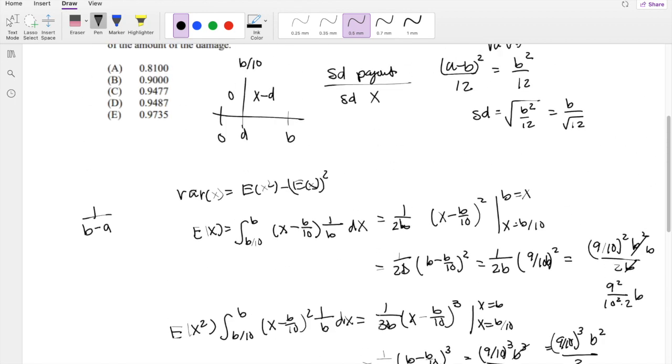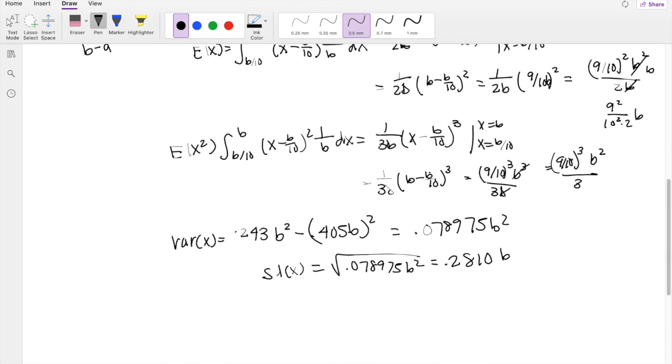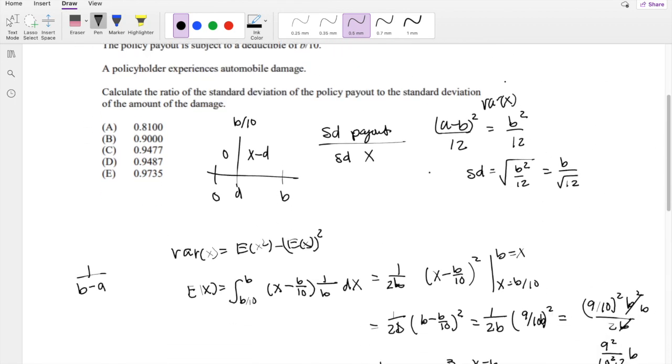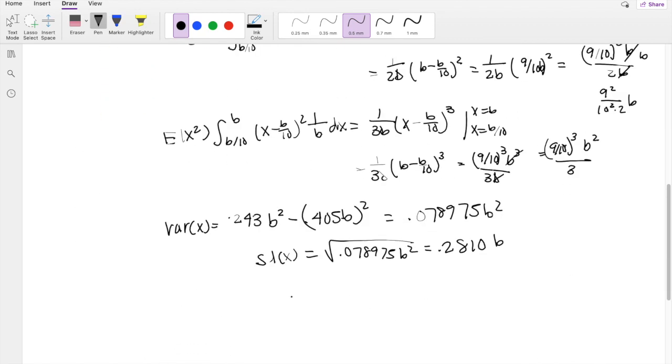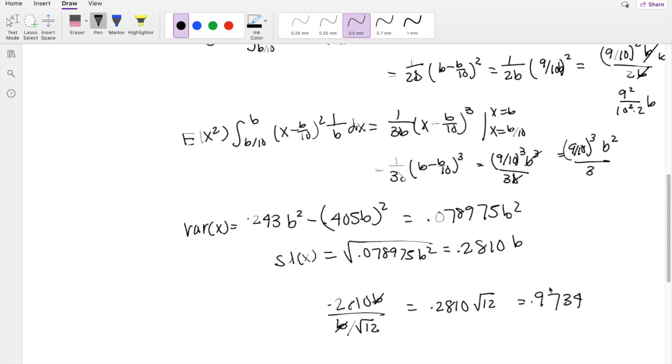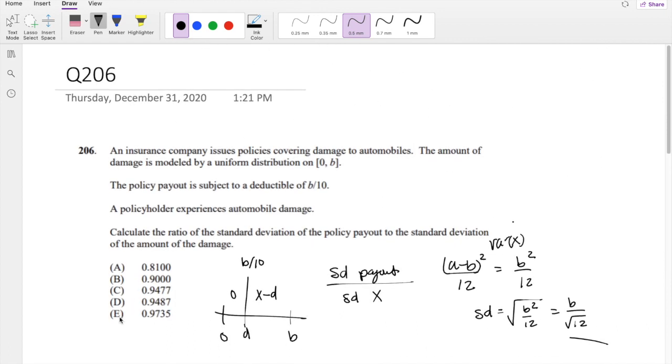Alright, so we have the standard deviation for both of them. So we just have to do the standard deviation of payment divided by standard deviation of x, where standard deviation of x is right here that we found earlier. So this is 0.2810B over B over square root of 12. So B's cancel out, and this becomes 0.2810 times square root of 12, which is equal to 0.9734, which is our answer E.